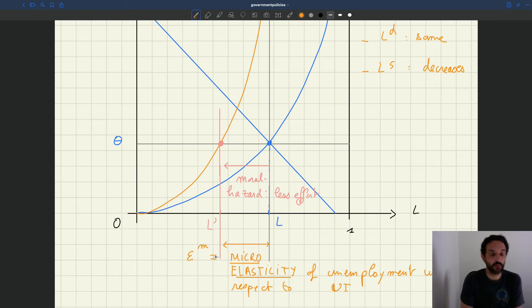The way people measure that empirically is by looking at small groups of workers who have seen their UI change when the entire market hasn't seen a change in UI, so we can make sure that tightness is controlled for. When you hear this type of discussion that people are going to search less when we increase UI, what people are talking about is often the micro-elasticity of unemployment with respect to UI.